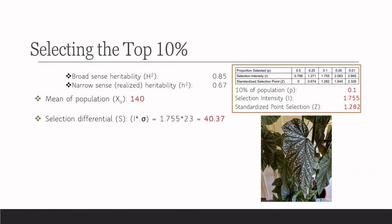So that's our original mean. The selection differential is going to be i times the standard deviation, so that gives us 40.37. The selected parent mean is going to be our original population mean plus the selection differential, giving us 180.37.